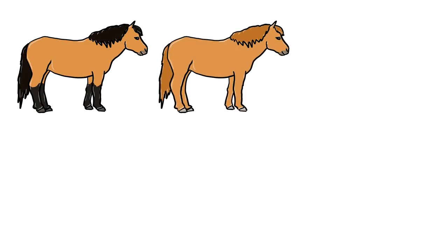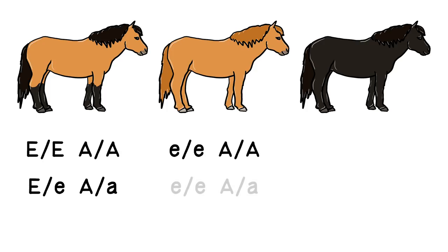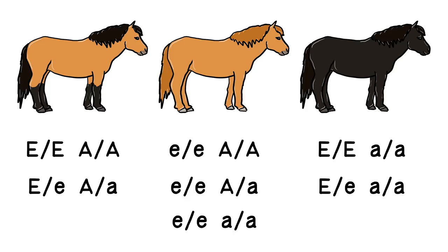So let's sum up which combinations are responsible for which colors. Bays need to have one good copy of each gene, but one is enough. Reds will always have two broken copies of the E locus, but can have any combination of A. Finally, blacks need one good E allele, because they need receptors to get the signal for black, but they all have two broken copies of A.